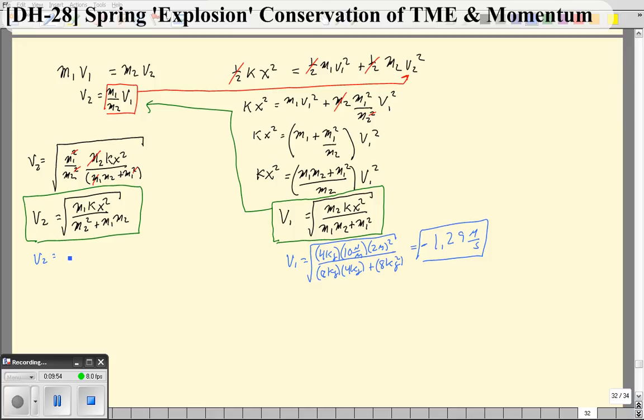So that's V1. When we plug in V2, the mass 1 is still 8 kilograms, times the k, which is still 10 newtons per meter, times the x, which is 2 meters, squared, over M2, which is 4 kilograms, squared, plus 8 kilograms times 4 kilograms. Take the square root, and because it's going to the right, we're going to take the positive root, and that gives us a velocity that is 2.58 meters per second.